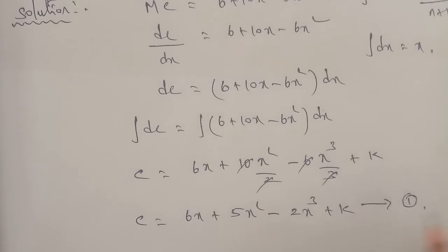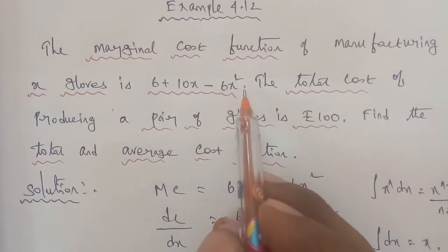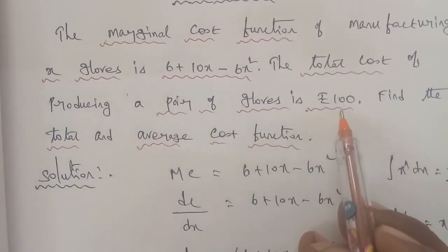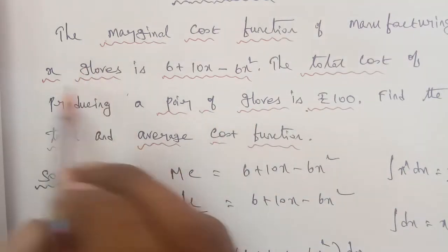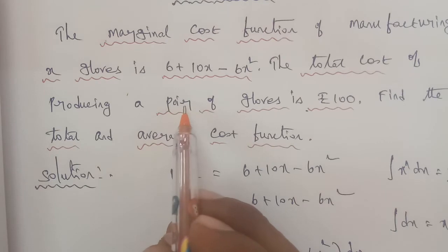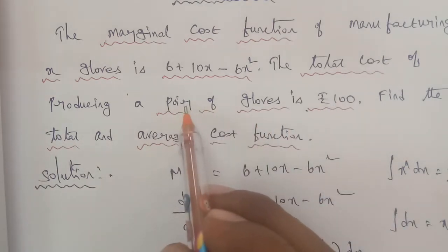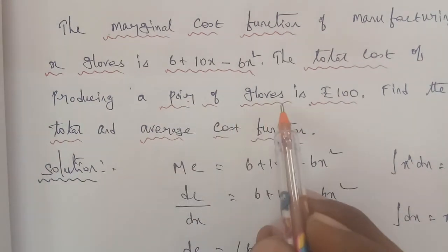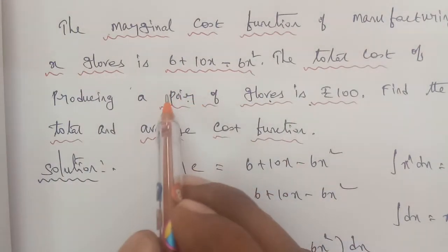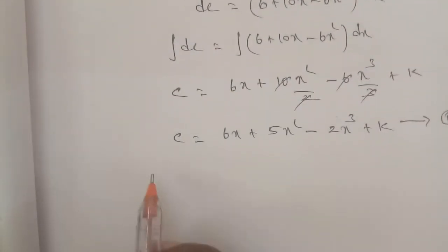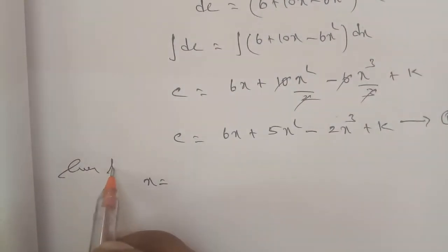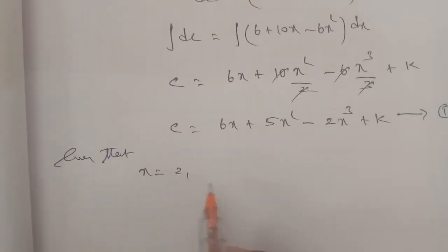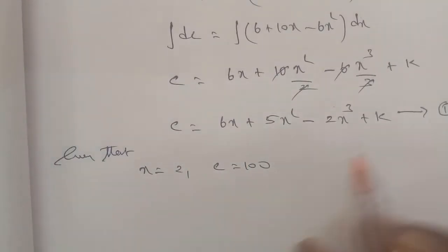Now applying the initial condition from the question: when x equals 2, the total cost C is rupees 100. So we substitute x equals 2 and C equals 100 into our equation to find the value of the constant k. Given that x is equal to 2 and total cost is rupees 100, we get 100 equals C at x equals 2.